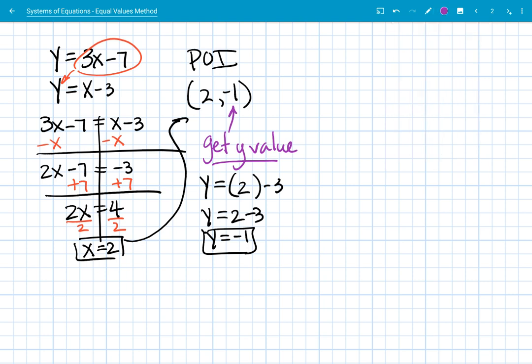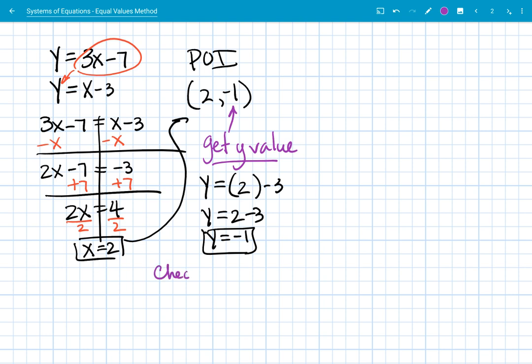Okay, last step. We're going to do this check just to be safe. And this time I need to use the top equation. 3 times whatever x is, then subtract 7. And we think that the x is 2 still. So that gets me 6 minus 7, and that's also negative 1. So because those check, that means this is the correct point of intersection, the solution for that system.